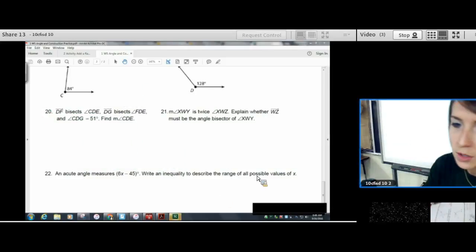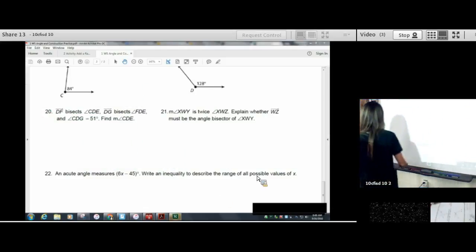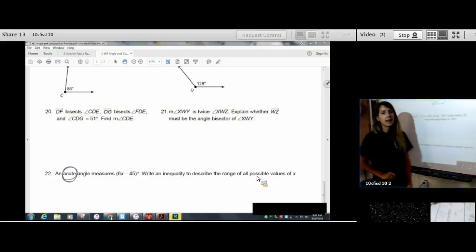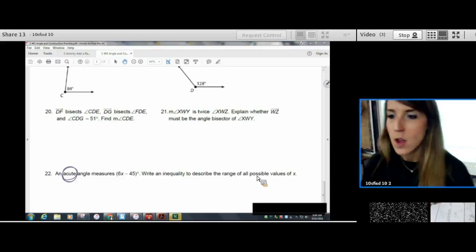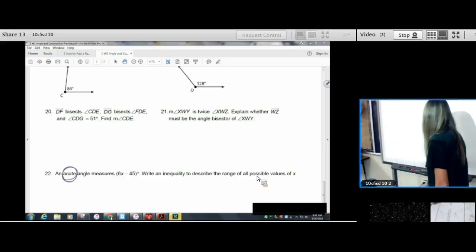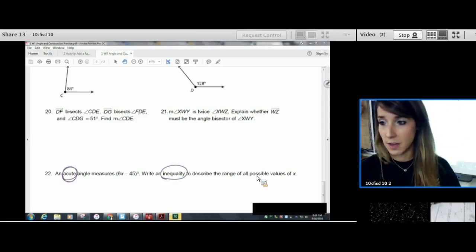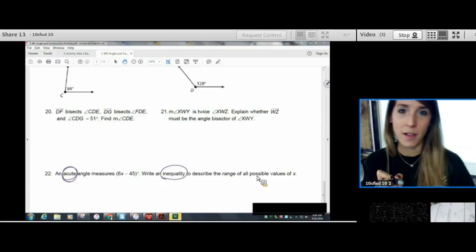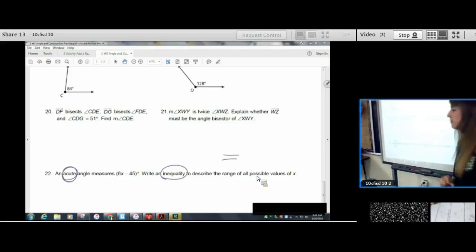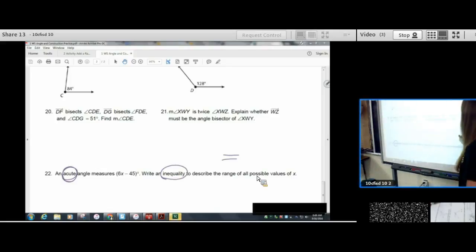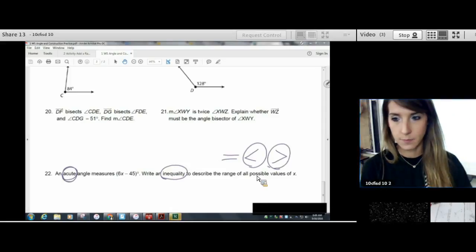Number 22. An acute angle, I'm going to circle that because that's important. Measure 6X minus 45. Write an... Ooh, that looks like an important word. Write an inequality to describe the range of values of X. So an inequality means it's not perfectly equal to. We're not going to find an answer. We're not going to say X equals 5. We're going to find an inequality. Something that's less than or greater than. So those symbols are called inequality.